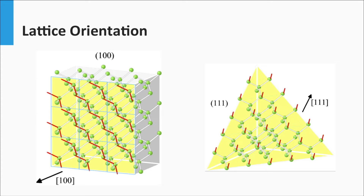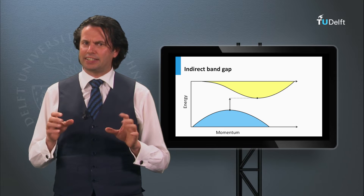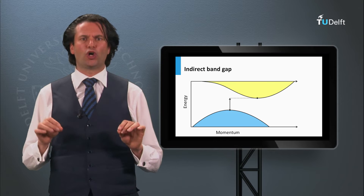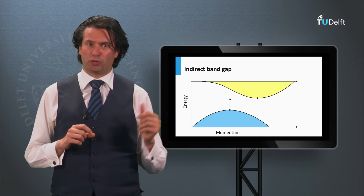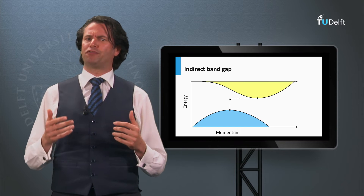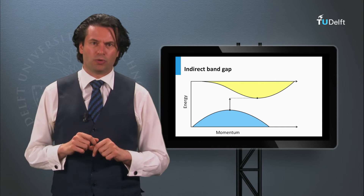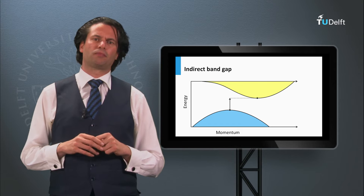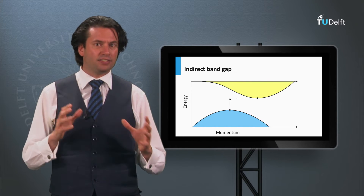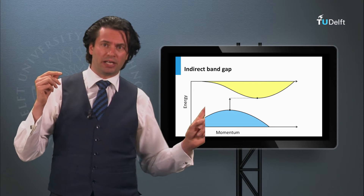Why are these directions important? As we discussed in week 3, we have direct and indirect band gap materials. This can be expressed in the so-called electronic band dispersion diagram. On the vertical axis you have the energy position of the valence and conduction band, and on the horizontal axis the crystal momentum, or the momentum of the charge carriers. To be excited into the conduction band, the charge carriers in an indirect band gap material require a change in both energy and momentum.